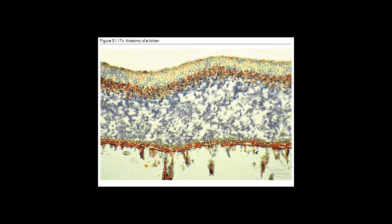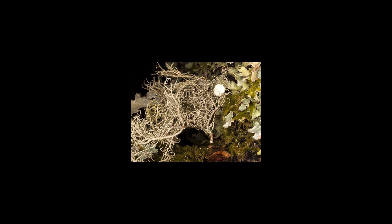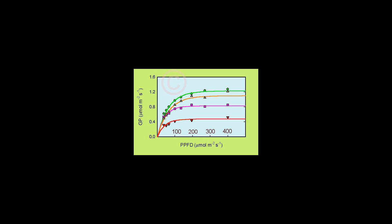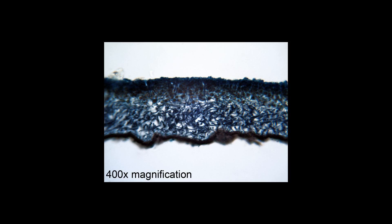The photosynthetic component of a lichen is called the photobiont or phycobiont. Sometimes the photobiont is a green algae, Chlorophyta. Sometimes a blue-green algae, Cyanobacteria — not really an algae. And sometimes both. The layer of tissue containing the cells of the photobiont is called the photobiontic layer.